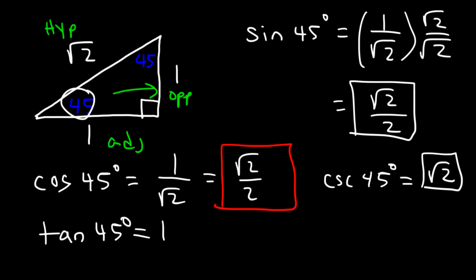Cotangent 45: you just got to flip this one. If tangent is opposite over adjacent, cotangent will be adjacent over opposite. So tangent and cotangent are the same. Tangent 45 and cotangent 45 are both congruent or equal to 1.